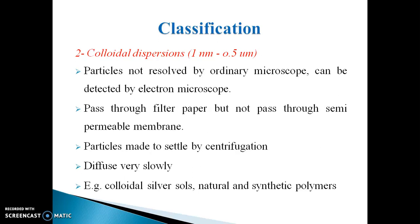The particles do not settle under normal conditions due to Brownian motion, which is the random zig-zag motion of particles. They collide with each other and with the walls of the container. This Brownian motion produces thermal energy, which resists the settling of particles. However, the particles of colloidal dispersion can be made to settle by forced centrifugation. Particles of colloidal dispersion diffuse very slowly.